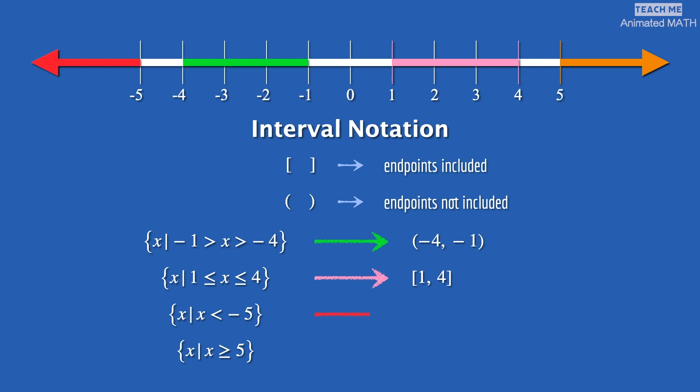The third interval uses parentheses and the infinity symbol for the starting point. The fourth interval uses a square bracket for the start because 5 is included. For the end, it uses a parenthesis and the infinity symbol.